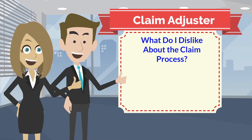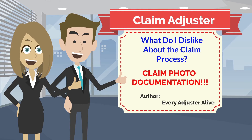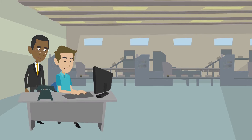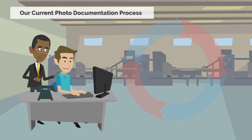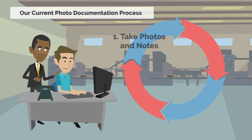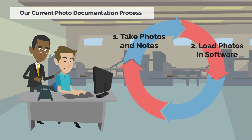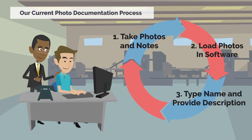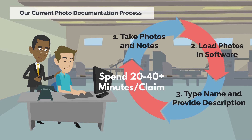What do I dislike about the claim process? That's easy: photo documentation. Here's the current process: take the photo, load the photos into the estimating software, name and describe each photo — spending 20 to 40 minutes for each claim.